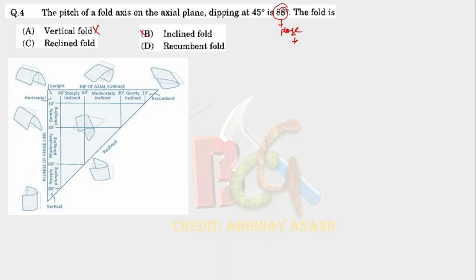This is a very important diagram; you must remember these cases. In the case of an inclined fold, the axial plane is dipping but the plunge is 0 degrees — it does not plunge. In the reclined fold case, the fold axis is reclined.